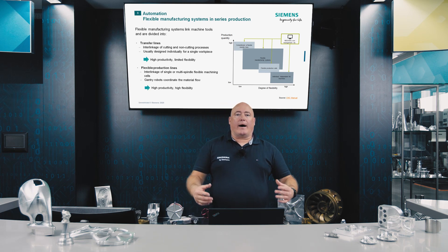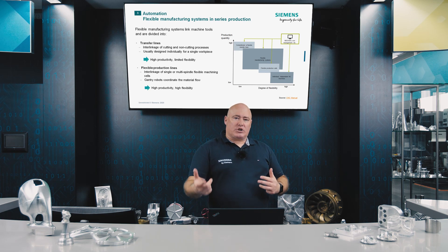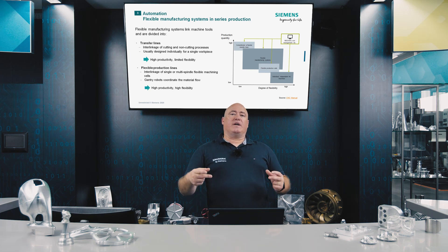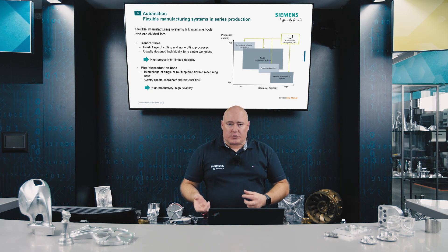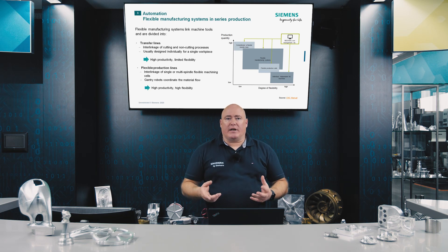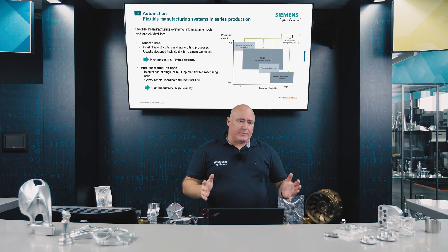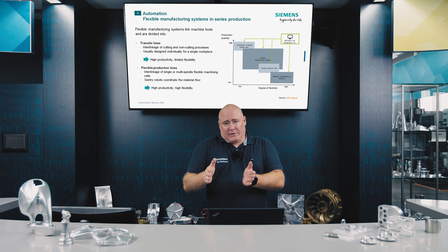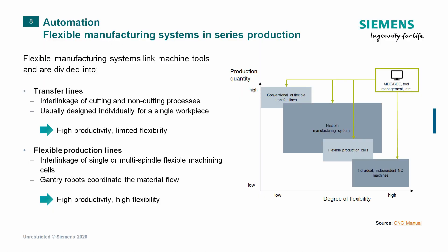Automatic functions and flexible workpiece flows can be further optimized with a transfer line or flexible production line. A transfer line links cutting and non-cutting processes — such as reforming or bending — together, enabling extremely high productivity but with limited flexibility. A flexible production line links together single-spindle or multi-spindle flexible machining cells, characterized by high productivity and very high flexibility.